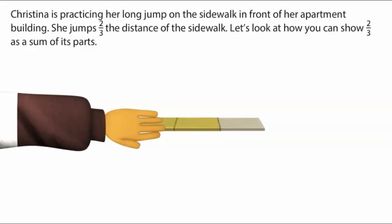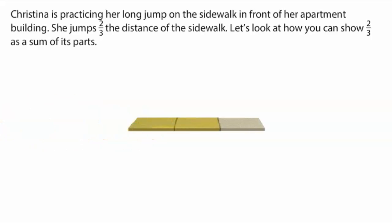Christina is practicing her long jump on the sidewalk in front of her apartment building. She jumps two-thirds the distance of the sidewalk. Let's look at how you can show two-thirds as a sum of its parts.